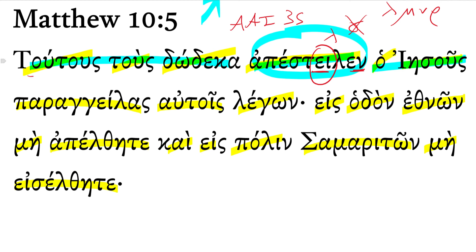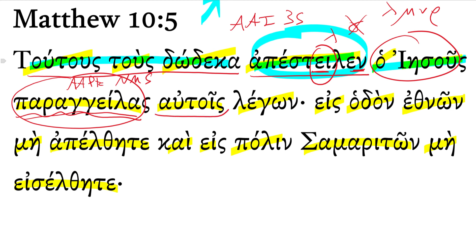So again starting at the beginning, these 12 Jesus sent having given instructions. That's an aorist participle of parangello, very similar. It's also a liquid verb, it's just an aorist active participle, nominative masculine singular referring to Jesus. I'm translating it temporally here, so having given instructions to them.